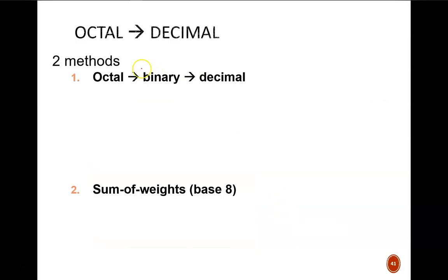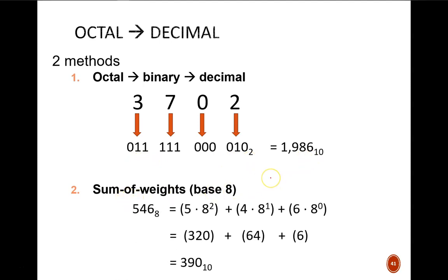The patterns we saw for hexadecimal apply for octal as well, except now we have a base of 8. When converting octal to decimal, I could use the two-step approach of first converting each octal digit into its 3-bit binary code, and then the second step of converting the lengthy binary number into decimal. The more direct approach uses the digit positions and powers of 8. The 6 is multiplied by 8 to the 0, the 4 is multiplied by 8 to the 1, and the 5 is multiplied by 8 to the 2. Sum those all up, and we get the final value of decimal 390.